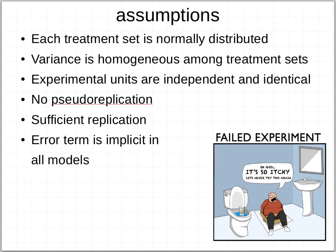Another assumption is no pseudo-replication, an idea that really emerged in the 1980s when Stuart Hurlburt wrote a paper pointing out that many people were committing this problem in field experiments. For example, if you take multiple plankton net tows through a pond and treat each separate net as its own independent sample, that is not truly a replicate if the pond is the experimental unit. If you take a bunch of sub-samples and treat them as separate replicates in your analysis, you're committing pseudo-replication. We've become accustomed to guarding against it, but it's still something you need to be aware of.